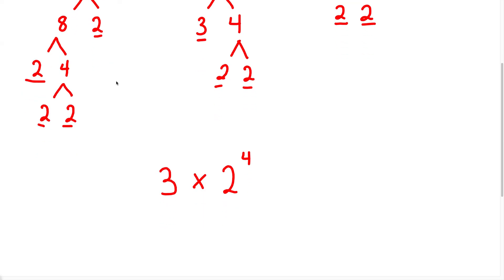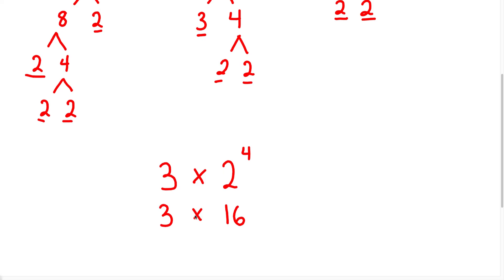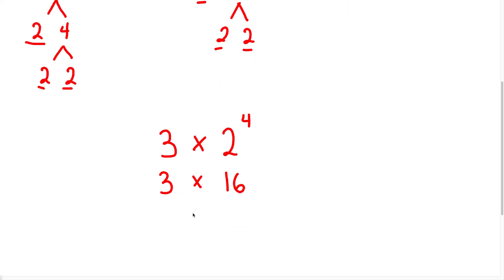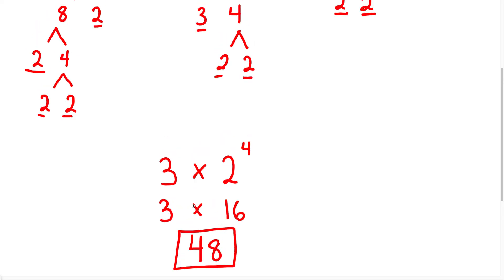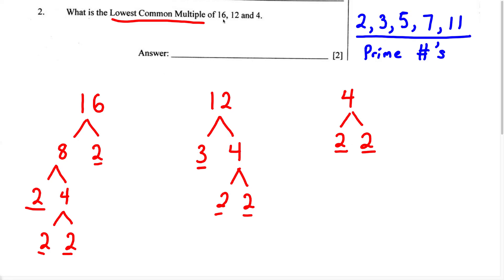Now let's solve the exponent first. 2 to the power of 4 is going to give us 16, because 2 times 2 is 4, 4 times 2 is 8, and 8 times 2 is 16. So now we have 3 multiplied by 16. When we do the multiplication, 3 multiplied by 16 gives us 48. Therefore, for the lowest common multiple of 16, 12, and 4, the answer is 48.